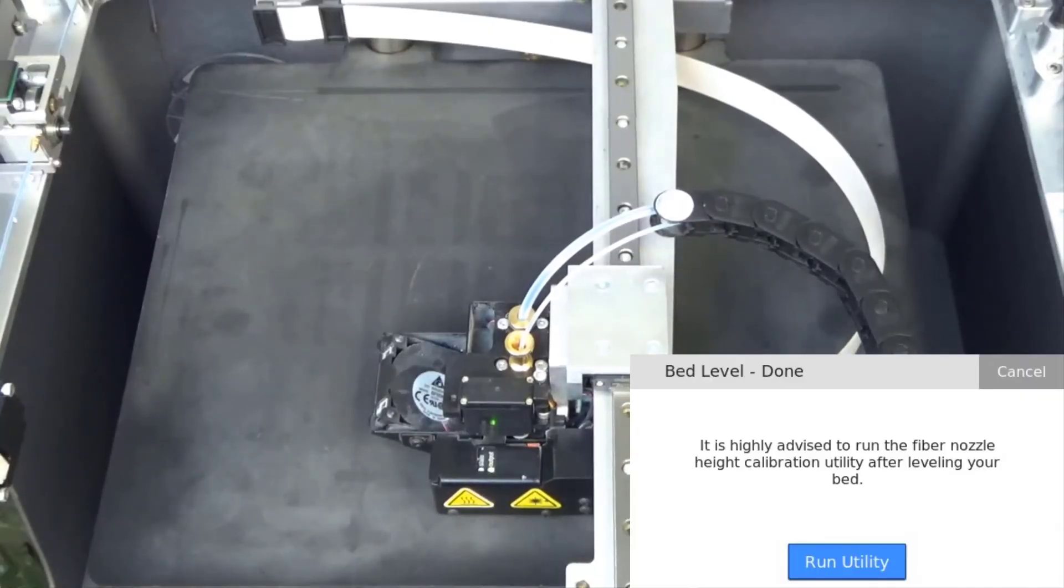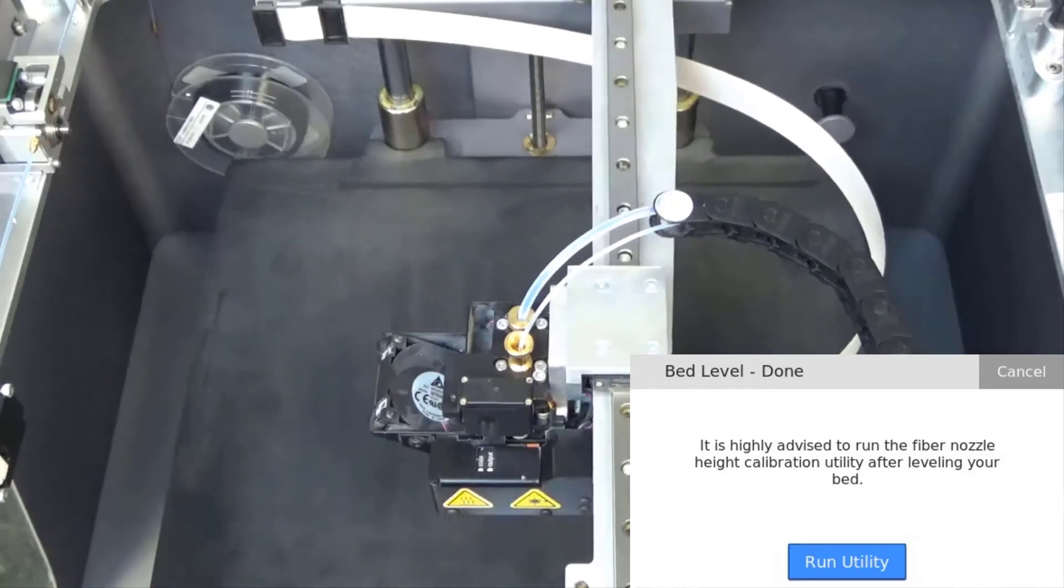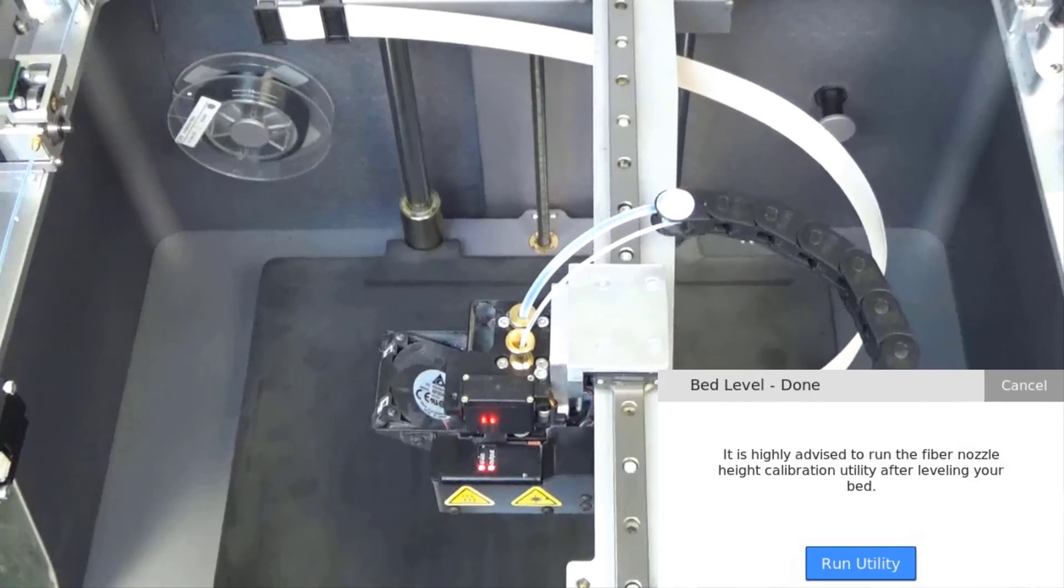Now you can press run utility to begin the fiber nozzle height utility, if applicable, or you can press cancel to exit the fiber nozzle height at this time.